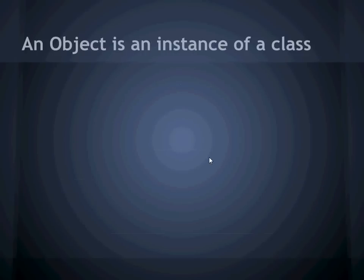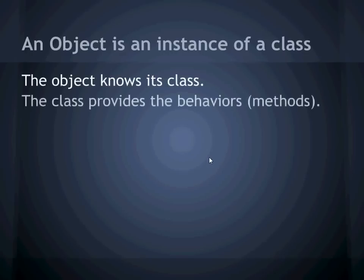Put another way, an object is an instance of a class. You'll hear the terms object and instance used more or less interchangeably. The object knows its class. The class provides the behaviors. We've learned how to write methods. The new fact about them here is that a method is attached to a class. Each object, in turn, has its own data.